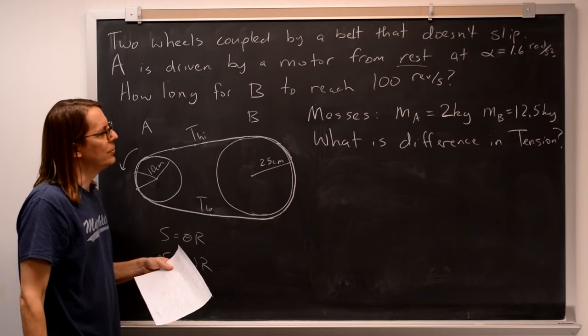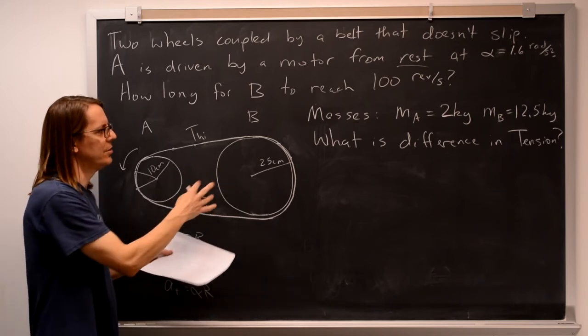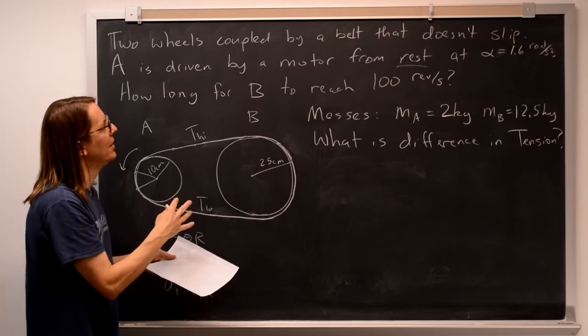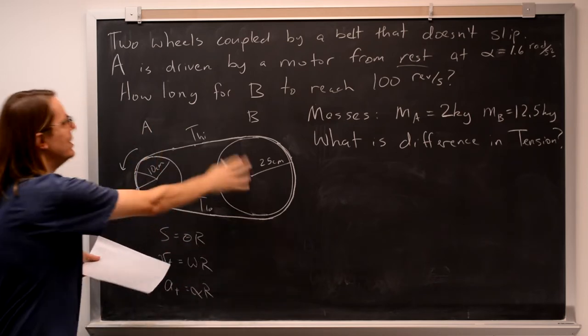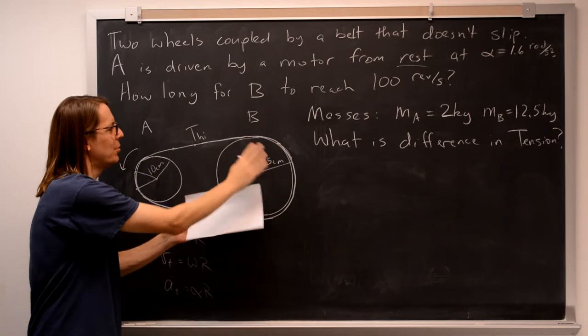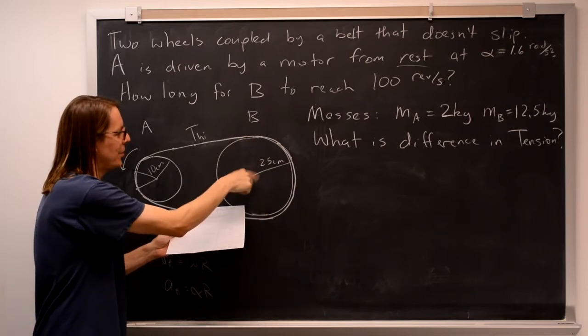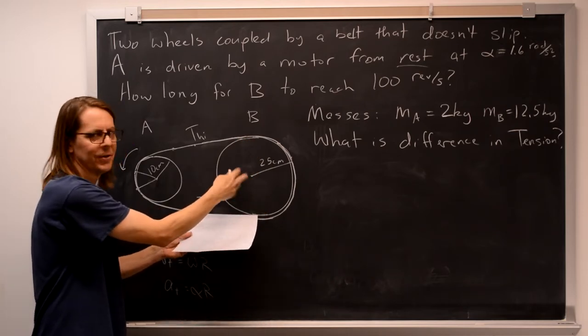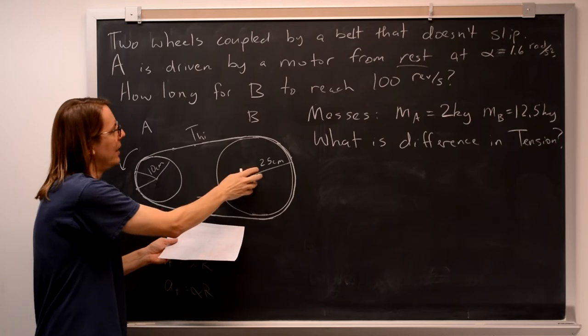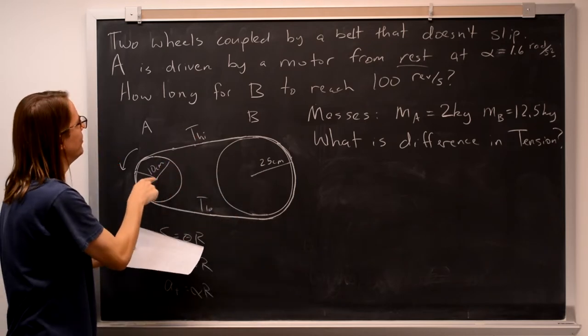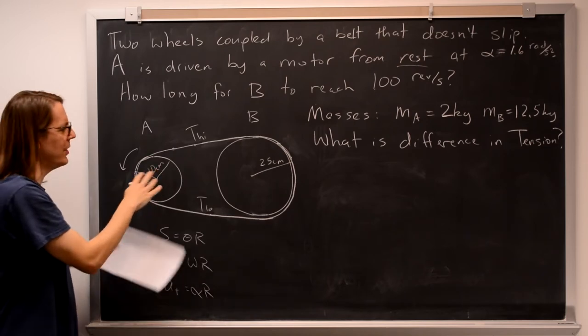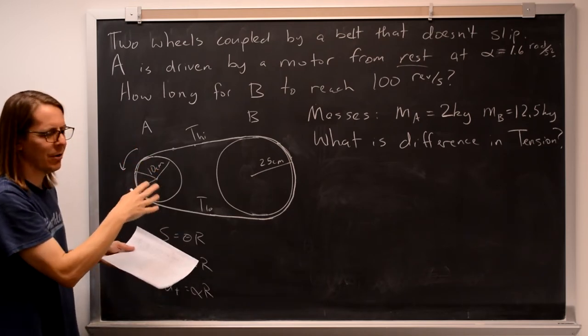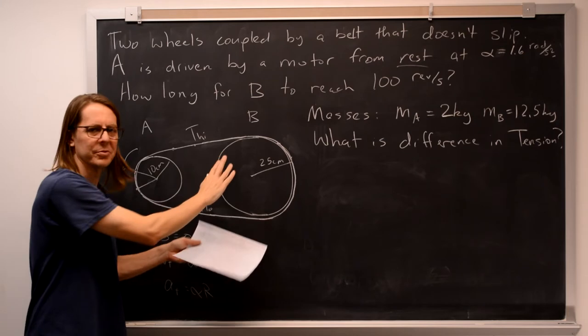Another potentially confusing thing about this problem is which disc to work on to figure this out. And the answer is B, because we know everything going on with B. It's just turning on this axis, so it's implied that there's some frictionless bearing there that it can turn around. A also has a motor driving it. We don't know what's going on with the motor. So that's why, in a test, try to be more clear. You're supposed to solve this with disc B.